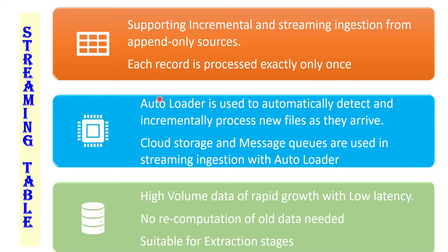Autoloader is used to automatically detect and incrementally process new data files as soon as they arrive. Internally, Autoloader uses cloud storage and messaging queues in order to complete the incremental ingestion. The use cases for Streaming Table include: whenever we have to process a huge amount of data growing with high velocity, where low latency is expected. Also for certain use cases where we don't need to recompute past data - where we don't need to touch old data and only need to focus on new incoming data.